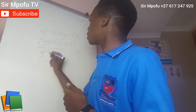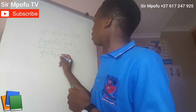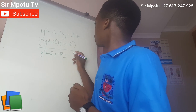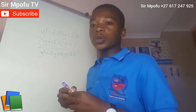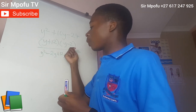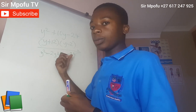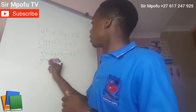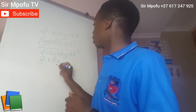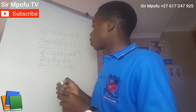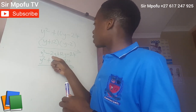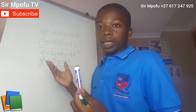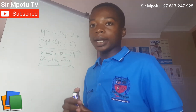Y times Y is going to be Y squared. Y times negative 2 is going to be negative 2Y. Then 12 times Y gives positive 12Y. 12 times negative 2 will be negative 24. As you'll be expanding, the first term multiplies the second bracket, and also the second term multiplies the second bracket. Our answer is going to be Y squared plus 10Y minus 24. Negative 2Y plus 12Y gives 10Y — it's the same. Meaning 100% correct. Proved.